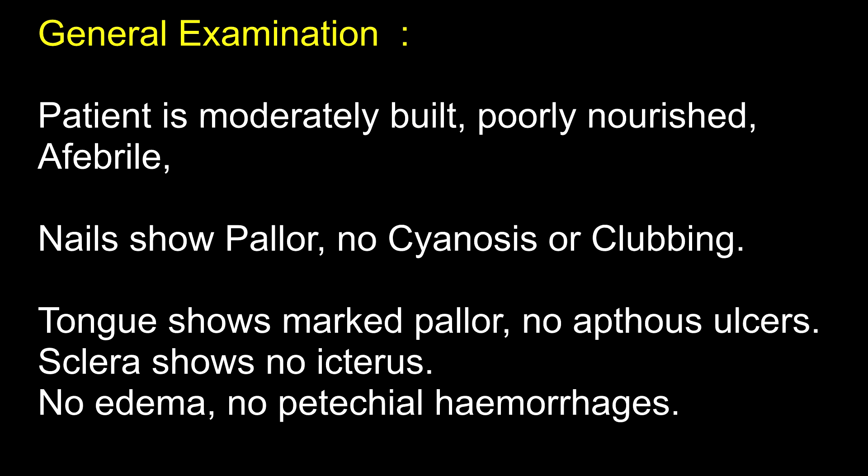On general examination, the patient is moderately built and poorly nourished, afebrile. Nails show pallor. No cyanosis or clubbing. Tongue shows marked pallor. No aphthous ulcer. Sclera shows no icterus. No edema. No petechial hemorrhages. When is pallor associated with splenomegaly? In hemolytic anemias, leukemias, hypersplenism and chronic malaria.